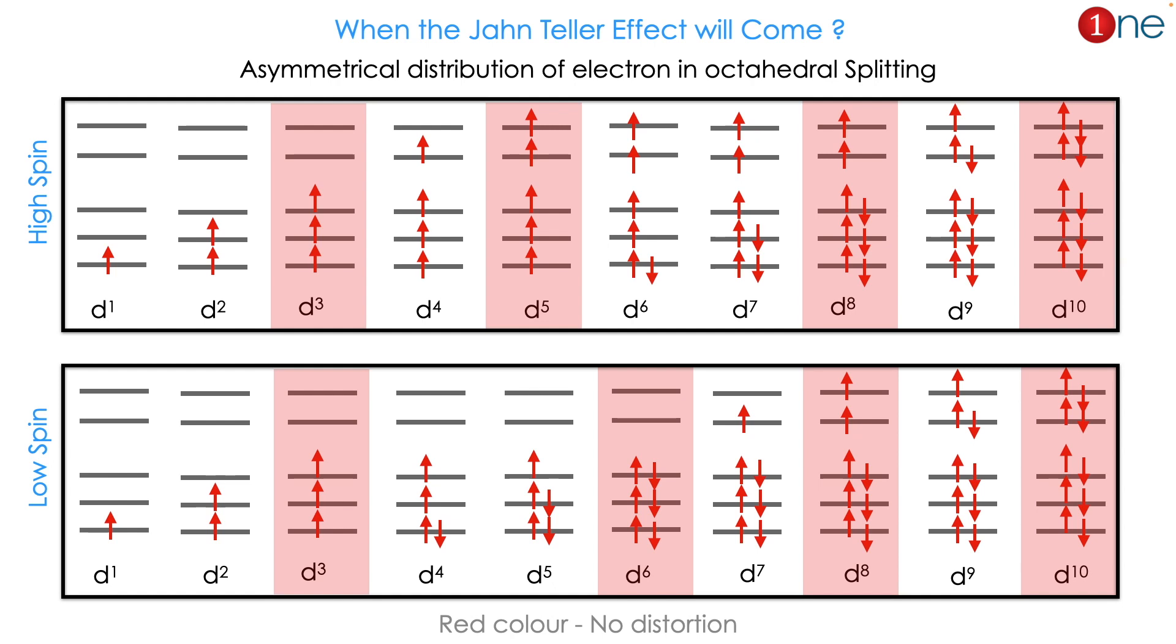The Jahn-Teller effect occurs when there is asymmetrical distribution of electrons in the octahedral splitting. This may happen in both low spin and high spin situations. Here are all possible situations.